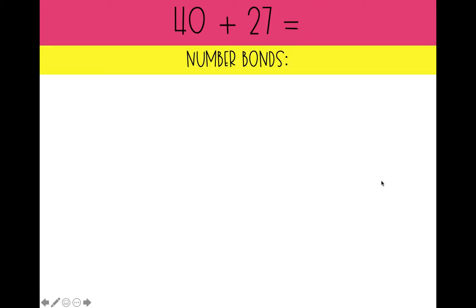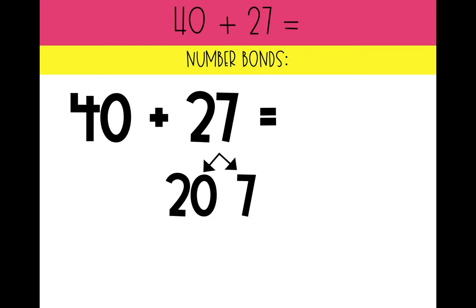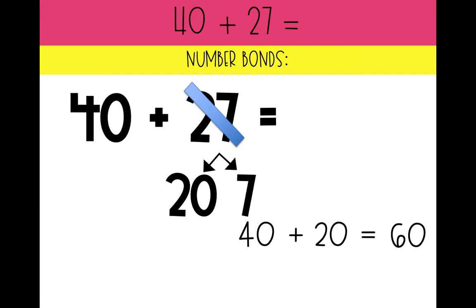Let's try it now with our number bonds — 40 plus 27. Which number can we break apart into its tens and ones? We can break up 27 into 20 and 7. Which numbers should we add together first? 40 plus 20. What is four tens plus two tens? 60 — it's six tens, which is 60. What do we still need to add to 60? We still need to add those seven ones. What is 60 plus 7? It's 67. That means 40 plus 27 equals 67.